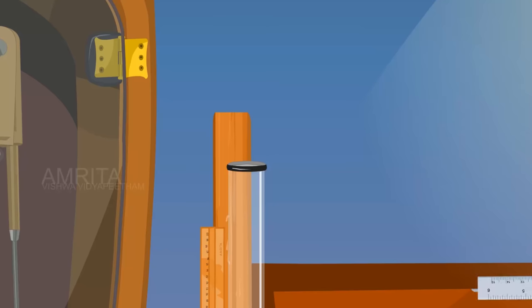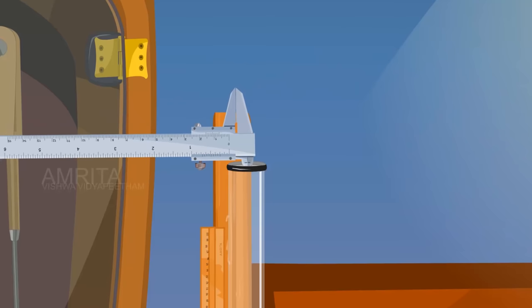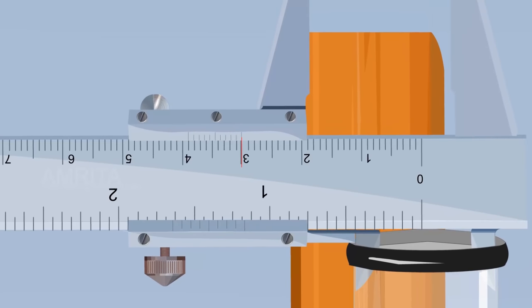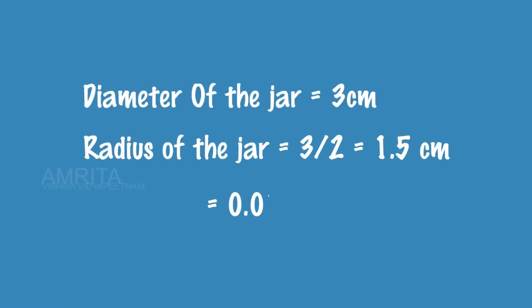Measure the inner diameter of the glass jar using a vernier calipers. The diameter of the jar is 3 cm. So the radius of the jar is 3/2 = 1.5 cm = 0.015 m.